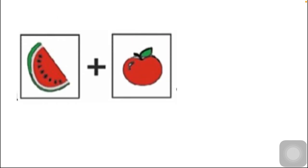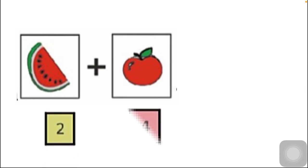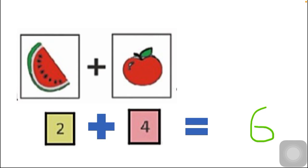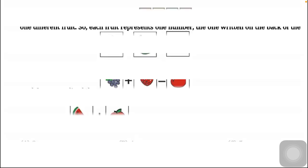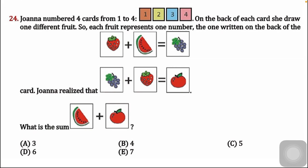So what is the sum of watermelon plus apple? We know watermelon equals two and apple equals four. Two plus four equals six. Our answer is six — option D is the correct answer.